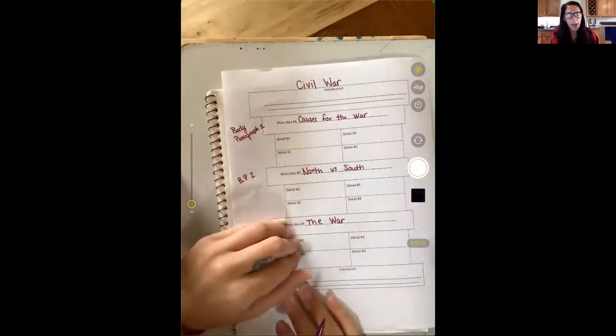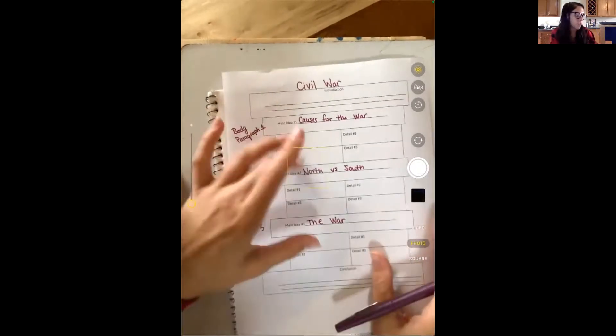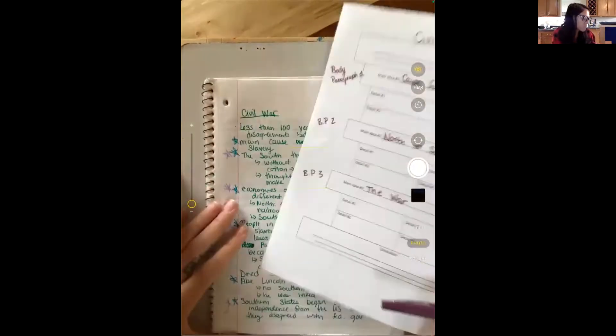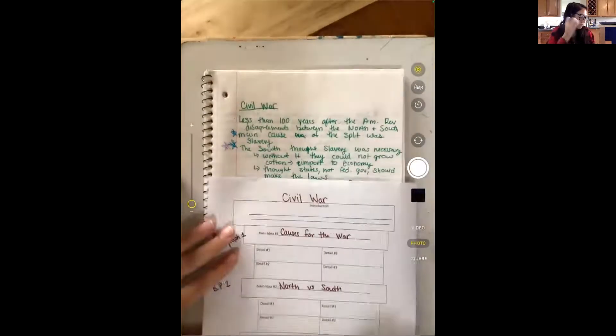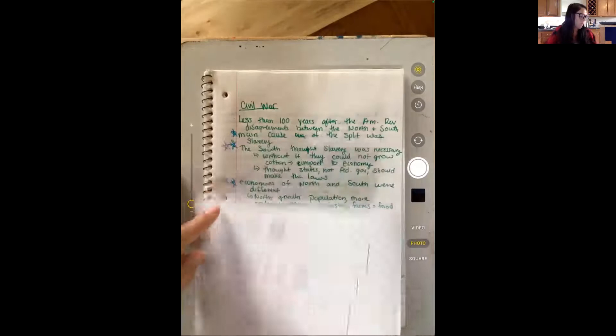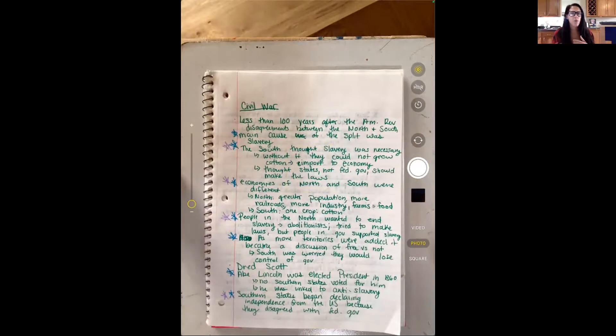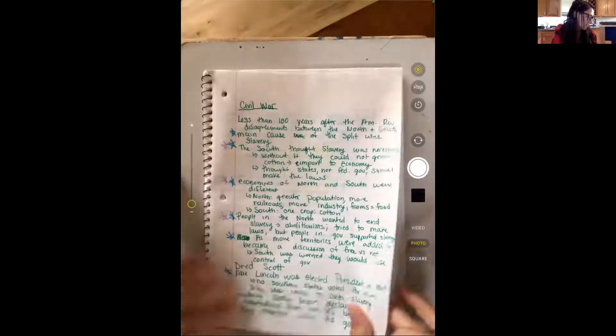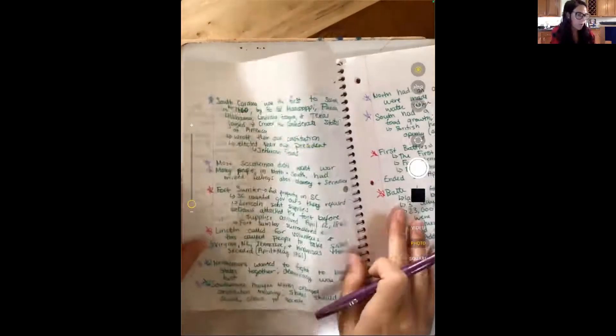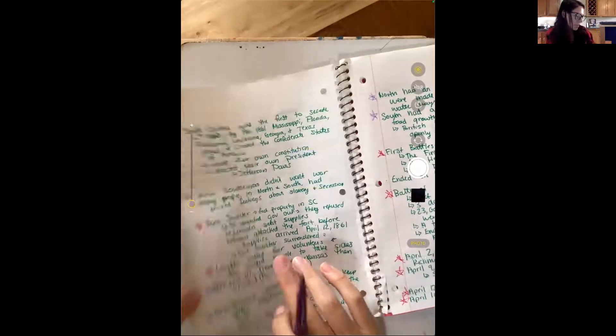Once I have my main ideas, then I want to start thinking, what details do I want to add? So I'm now going to look back through. So my causes for the war were my blue ones. So I'm going to kind of look over all of my details that I have first, and then I'm going to think what I want to add. So I'm rereading.